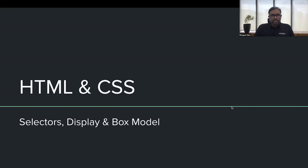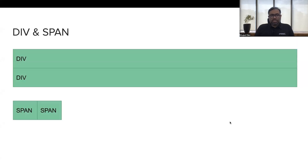In this section we are going to look at selectors, how display affects each and every element, and a very specific thing to HTML elements called the box model. Before going to selectors, there are two kinds of elements you need to know: the first is a div and the second is a span. A div is a block element and the span is an inline element.